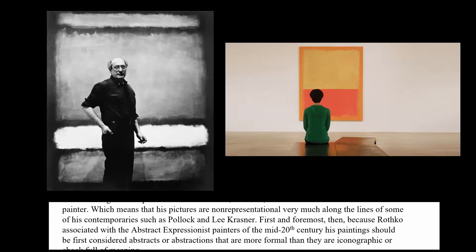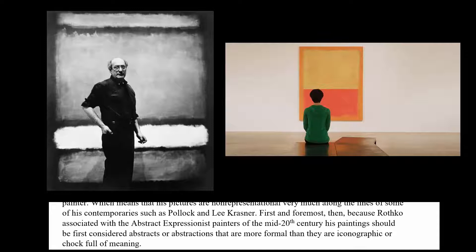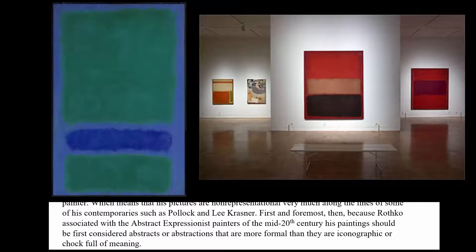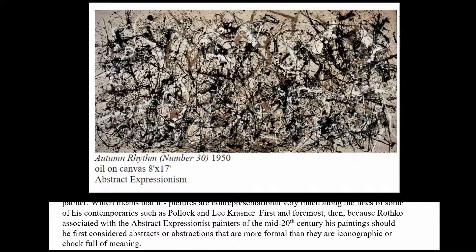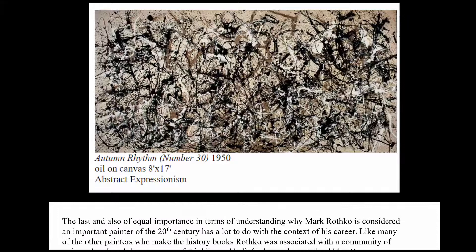What this really means is that the pictures are not purely non-representational, unlike some abstract expressionists such as Pollock and Lee Krasner — his wife, who was also a very good painter. Rothko was also associated with and hung out with the abstract expressionist painters of the mid-20th century, and Pollock especially talked about the spiritual meanings behind their paintings.